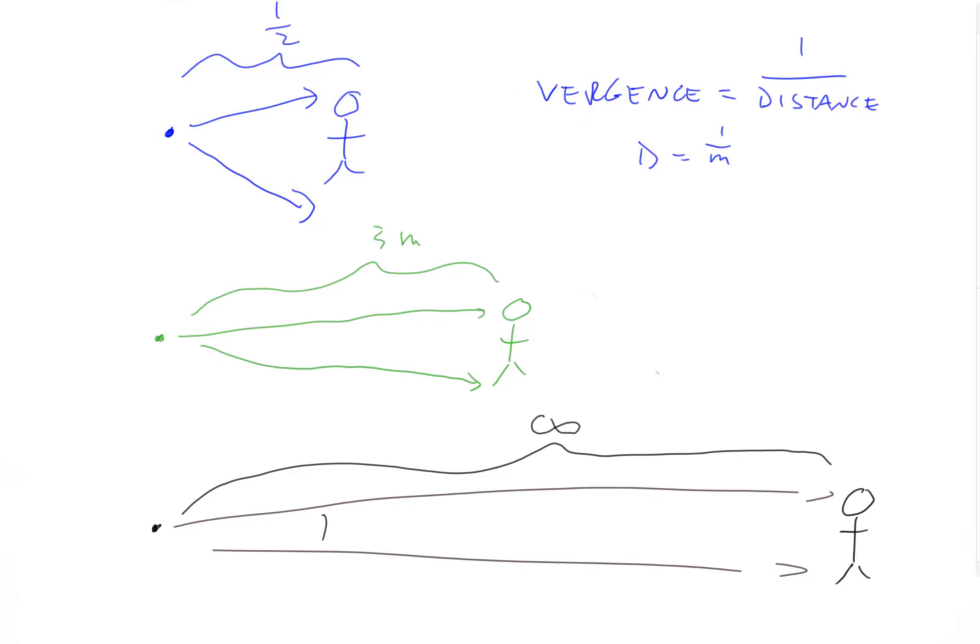And the inverse is also true. If D equals one over M, then M equals one over D. Distance in meters equals one over vergence in diopters. Couldn't be easier - that's the simplest inverse relationship you could get.